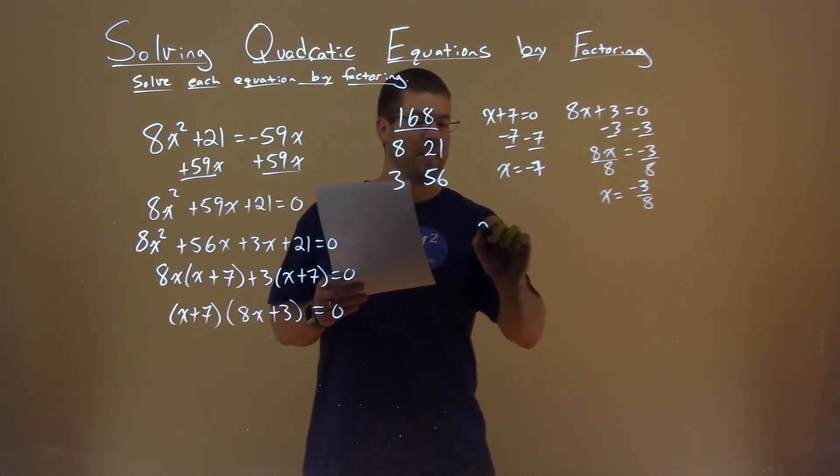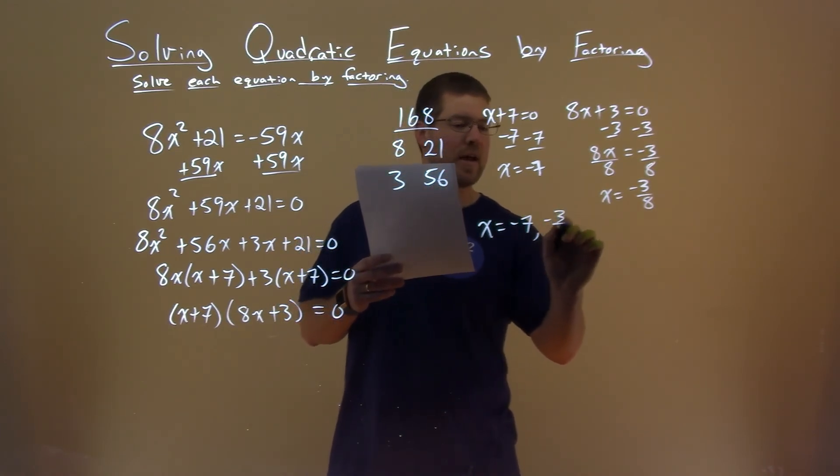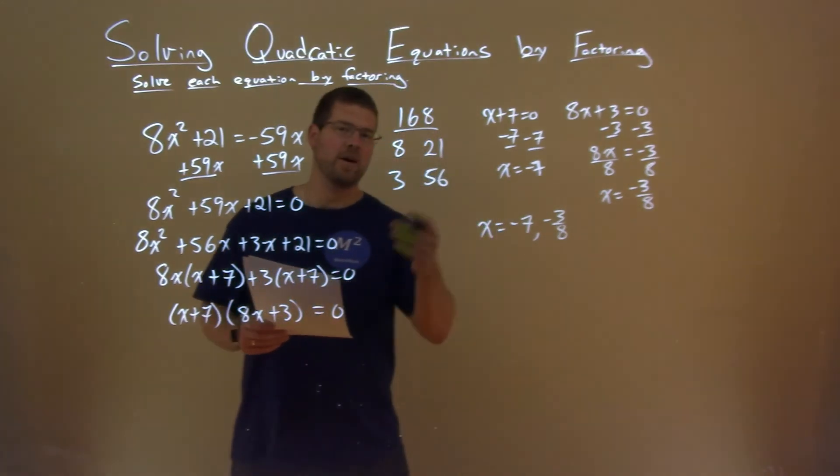And so we can combine them together to be one statement: x equals negative 7, and negative 3 eighths. And that is, after all this work, our final answer.